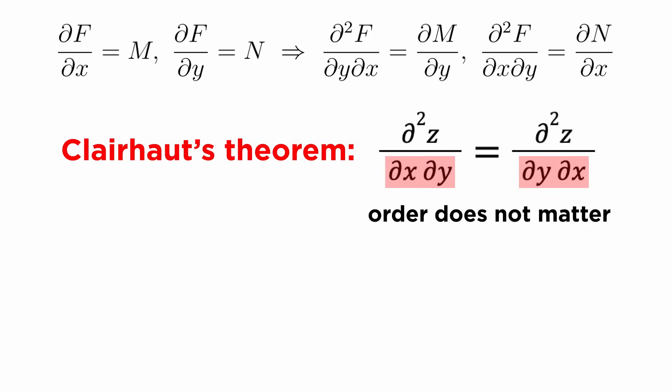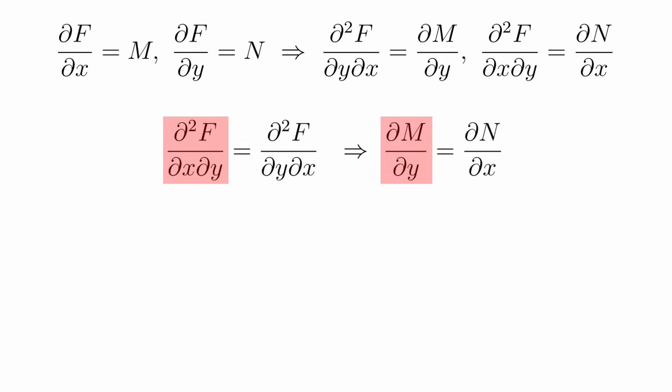We can now use the fact that when we take a mixed partial derivative, it doesn't matter which order we take the derivatives in, which is a result known as Clairaut's theorem. We get that the partial derivative of M with respect to y must be equal to the partial derivative of N with respect to x.